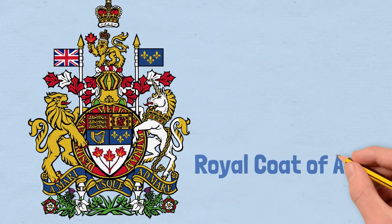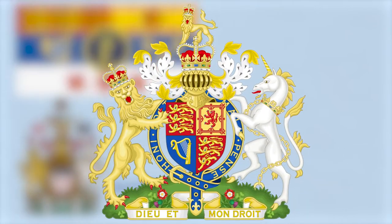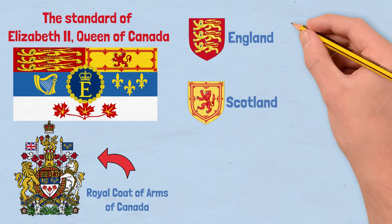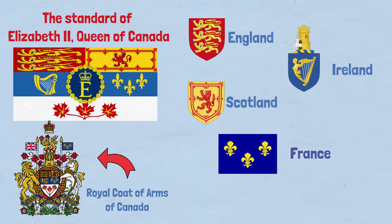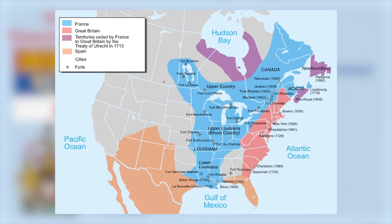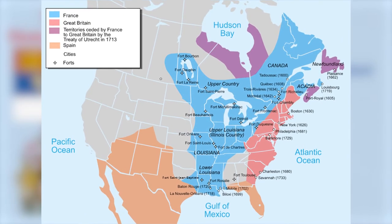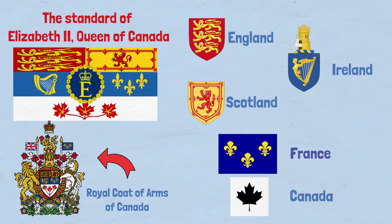This flag takes inspiration from the royal coat of arms of Canada, which itself is quite similar to the UK's. The three quadrants represent the United Kingdom — England, Scotland, and Ireland to be precise. The fourth quadrant represents France, as both countries used to control Canada as part of their empires in the past. The maple leaves, of course, symbolize Canada as well as its people.